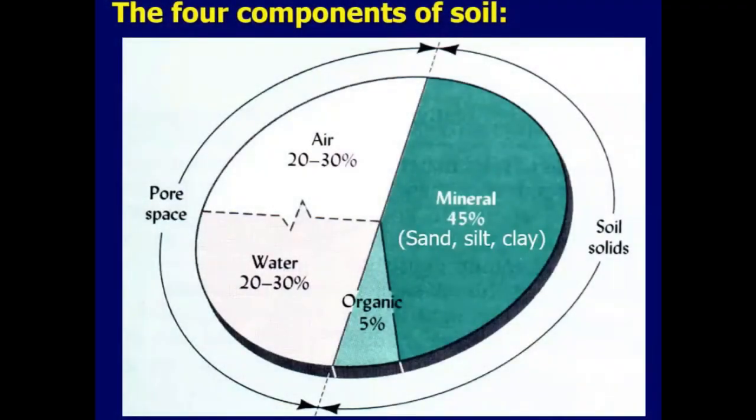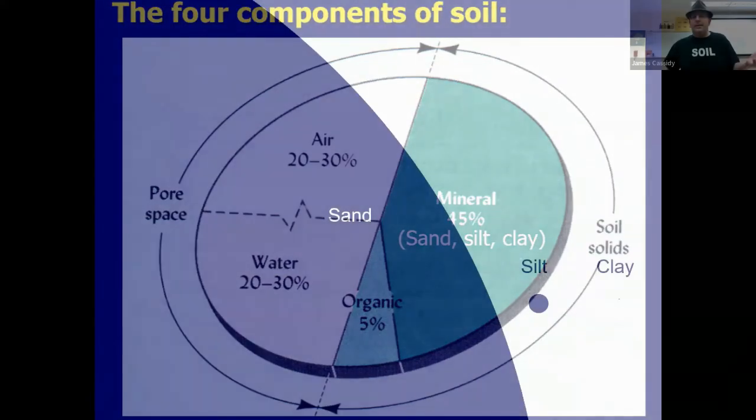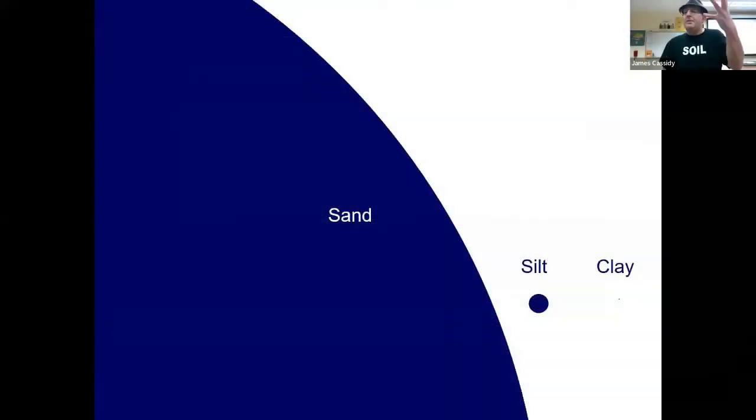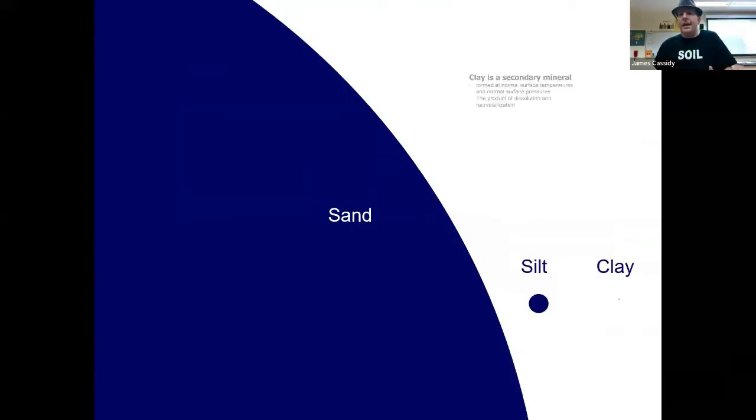Soil is rotted rocks and decomposed organic matter. It's about half space, and a rock dissolves in water, releases nutrients, and becomes different size particles of sand, silt, and clay.